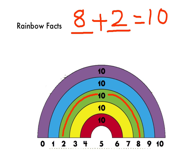Now you could use another strategy like counting on. You could look at 8 and then you could go 9, 10. But if you know your rainbow facts and you know that 8 and 2 go together to make 10, then you can just look at 8 and 2 together and go instantly, that's 10. You know that in your head.